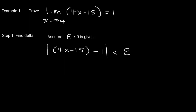The pattern is to manipulate the expression inside the absolute value so that you end up with x minus a — in this case x minus 4. So: |4x − 15 − 1| = |4x − 16| = 4|x − 4| < ε, which implies |x − 4| < ε/4. We're going to choose delta to be less than or equal to epsilon over 4.